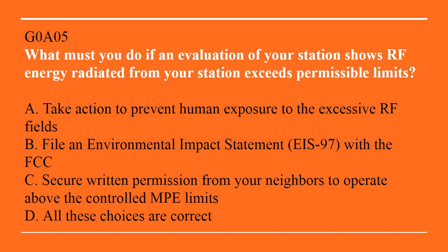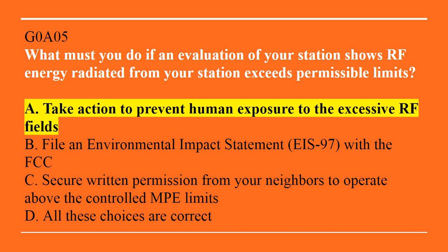G0A05: What must you do if an evaluation of your station shows RF energy radiated from your station exceeds permissible limits? A, take action to prevent human exposure to the excessive RF fields. B, file an environmental impact statement, EIS-97, with the FCC. C, secure written permission from your neighbors to operate above the controlled MPE limits. Or D, all of these choices are correct. Answer is A — take action to prevent human exposure to the excessive RF fields.